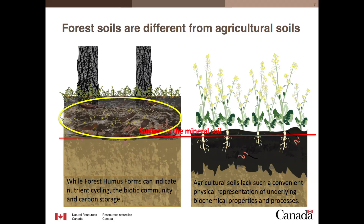I wanted to emphasize that forest floors are different from agricultural soils in that they build up organic horizons on the mineral surface, which agricultural soils don't. We can refer to these as organic horizons, LFHO, humus form, or simply the forest floor. The status of the humus form tells us something about nutrient cycling, the biotic community, and carbon storage. Agricultural soils lack this convenient physical representation of these underlying processes, so we should be taking advantage of what we can actually see.